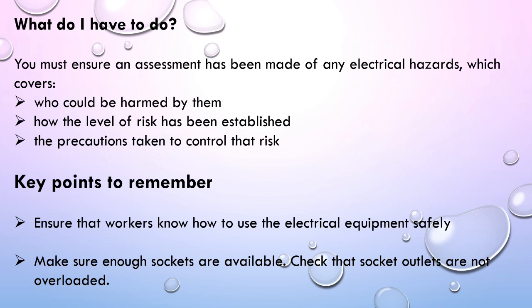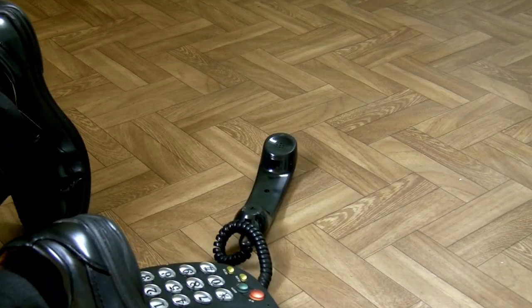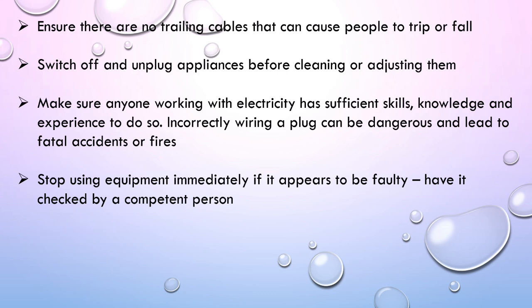Key points to remember for electrical safety: ensure workers know how to use electrical equipment safely, make sure enough sockets are available, check that socket outlets are not overloaded, ensure there are no trailing cables that can cause people to trip or fall, switch off and unplug appliances before cleaning or adjusting them. Make sure anyone working with electricity has sufficient skills, knowledge and experience, as incorrectly wired appliances can be dangerous and lead to fatal accidental fires.